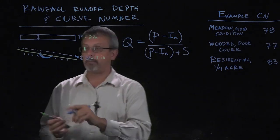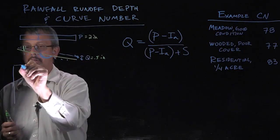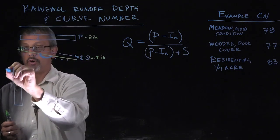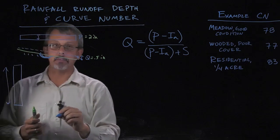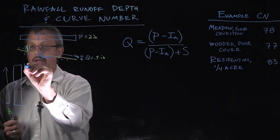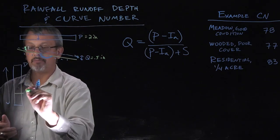We're thinking about the overall precipitation as being some amount of inches, and we can think about Q as being some fraction of that.